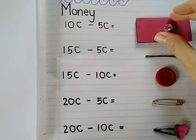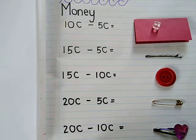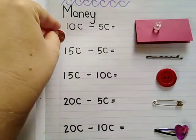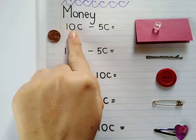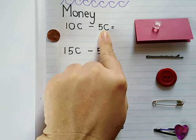So if I want to buy this little bead and I have a 10 cent coin, this is the sum that I'll write. I have 10 cents and I have to take away 5 cents so that it can go to the shop when I buy my little bead.